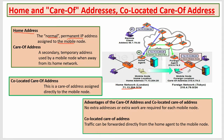The home network is where we get our permanent IP addresses. Whenever anyone wants to transfer data, it is sent to the home agent, and then the home agent transfers those messages to our IP address. That is the home address.